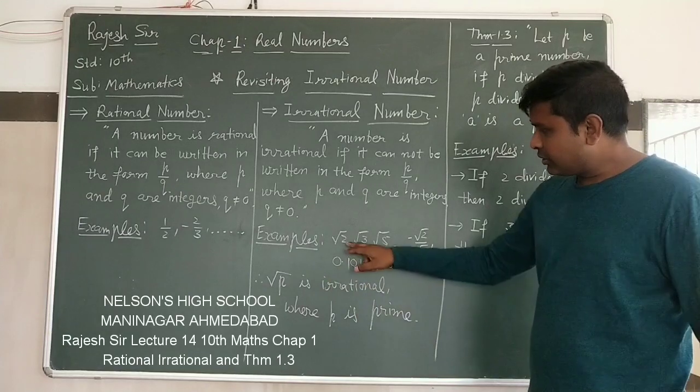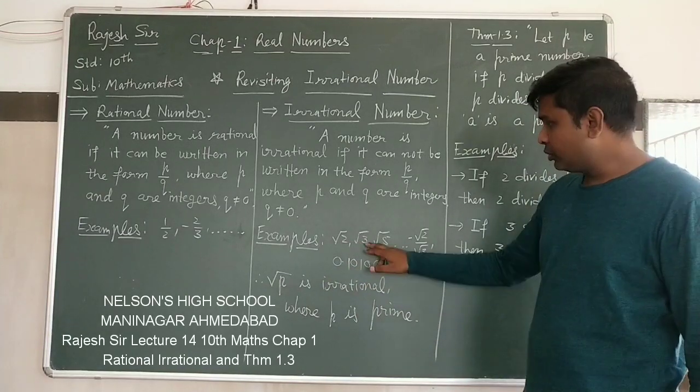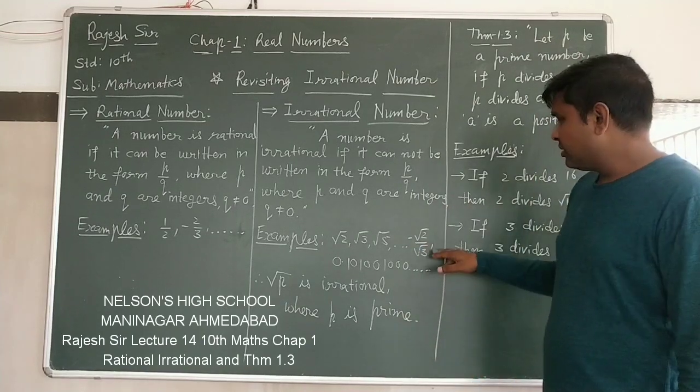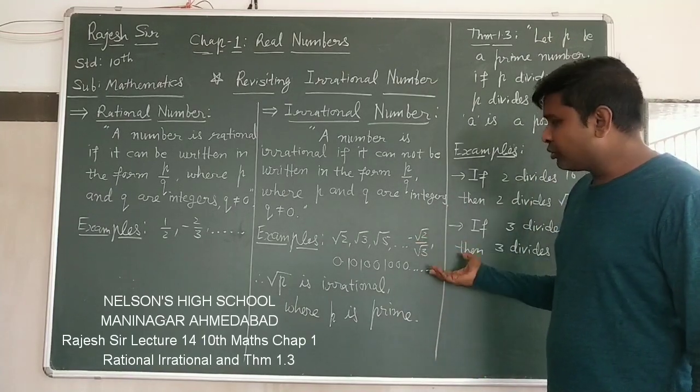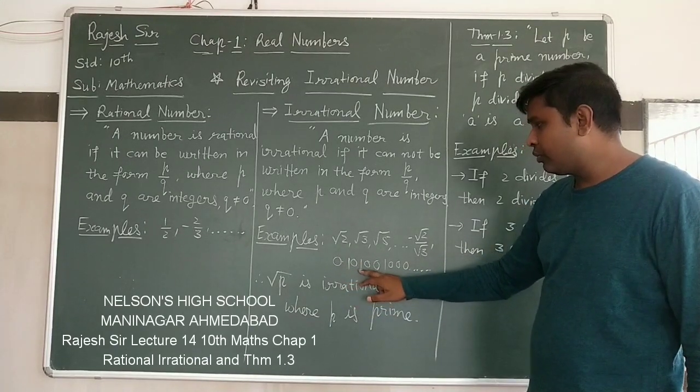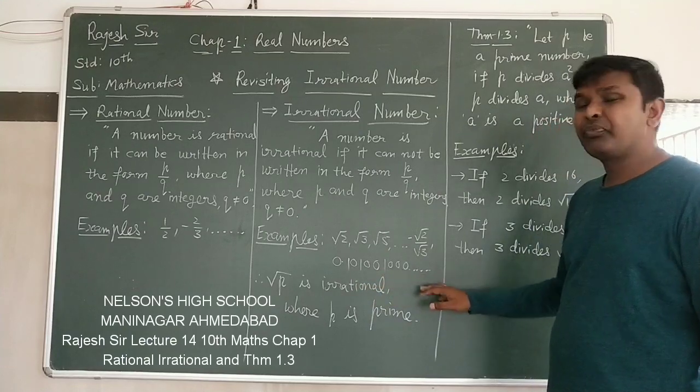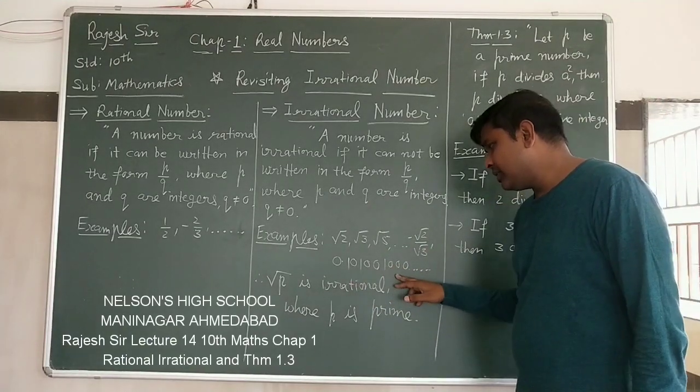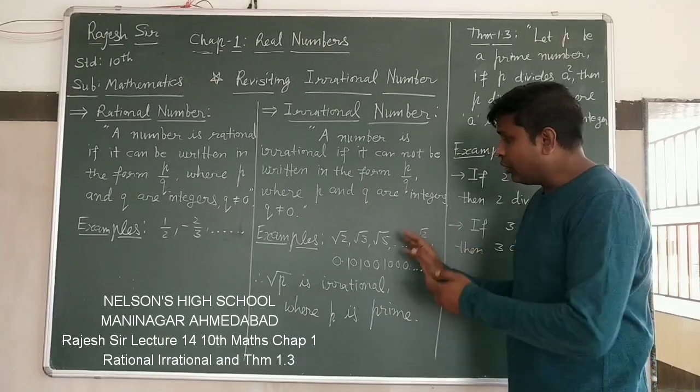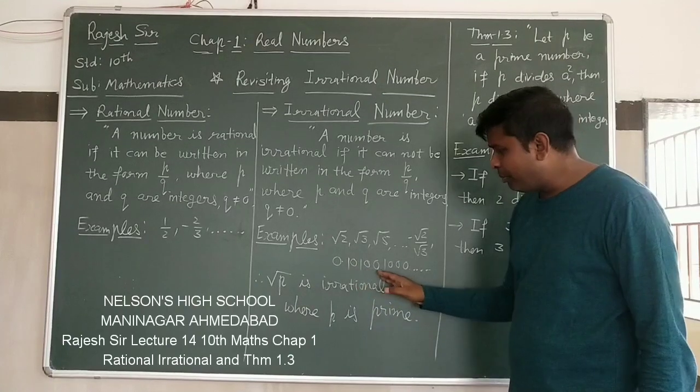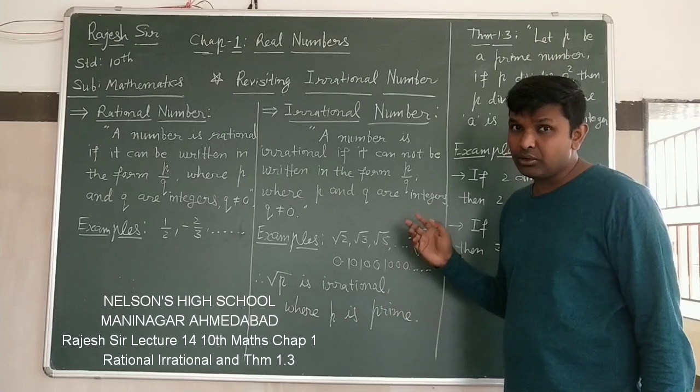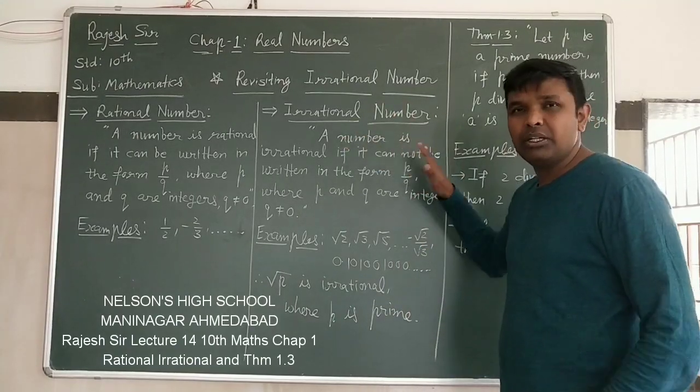Some examples we have like root 2, root 3, root 5, and so on, all root numbers, minus root 2 upon root 3 also. This also the decimal expansion form is given 0.10, 100, 1000. Just recall here that this number is non-terminating because it doesn't have an end, and non-recurring also because no pattern is repeating here. So, non-terminating and non-recurring is the irrational number form.